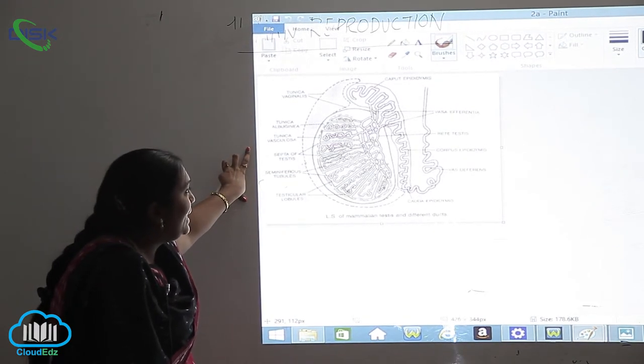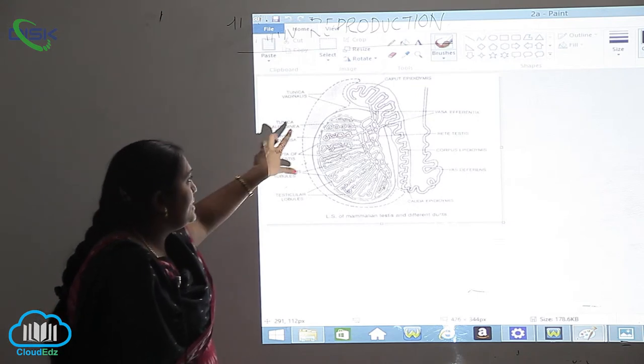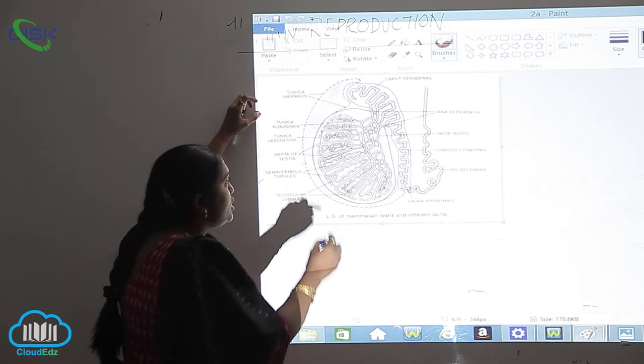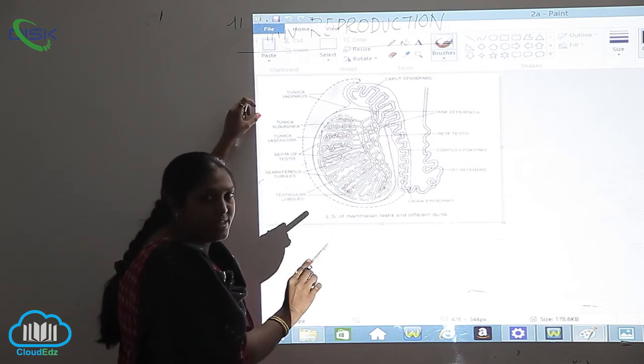When you take the mammalian testes, it is like this, which is oval in shape with different ducts.